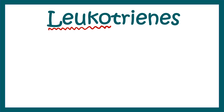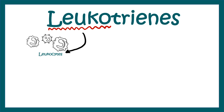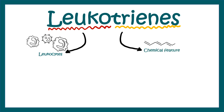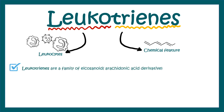Let's analyze the name to understand the concept. 'Leuko' is similar to leukocytes — it's associated with leukocytes. 'Trienes' tells us about a chemical feature: there are three consecutive double bonds. So leukotrienes are chemical molecules with three consecutive double bonds that are found in leukocytes.